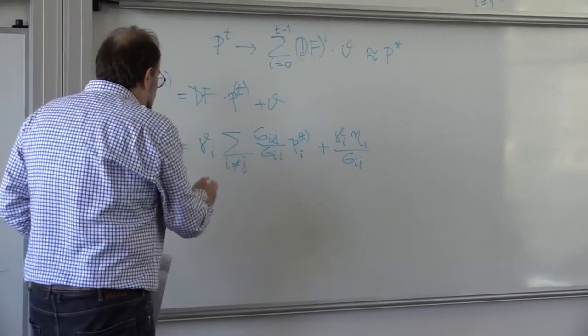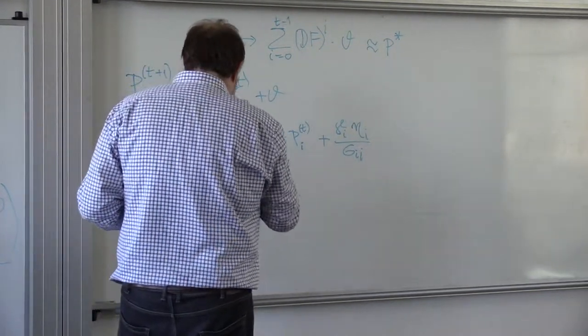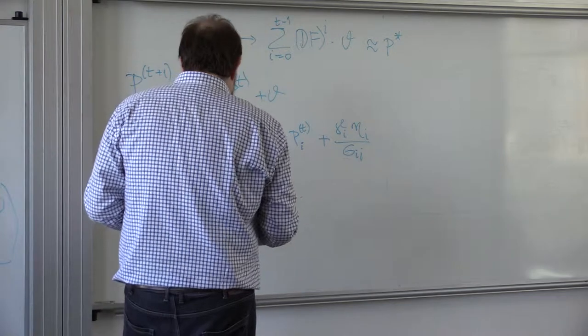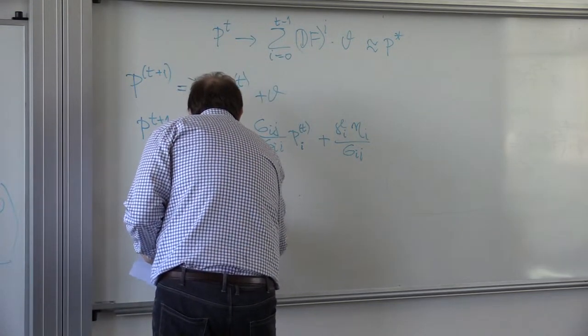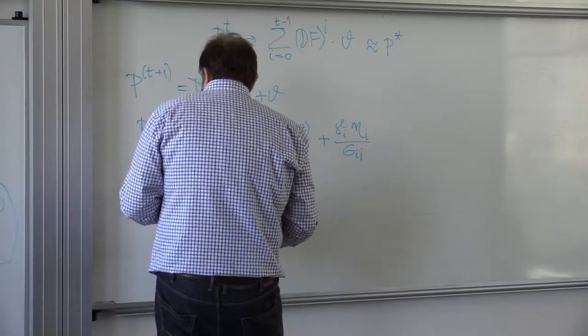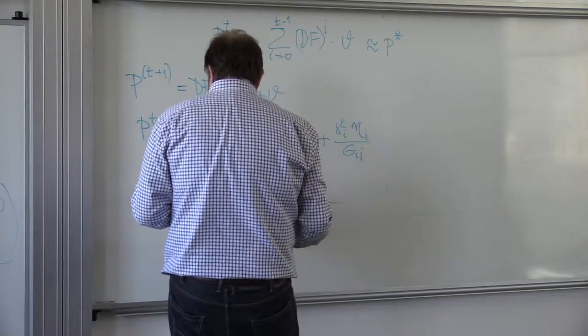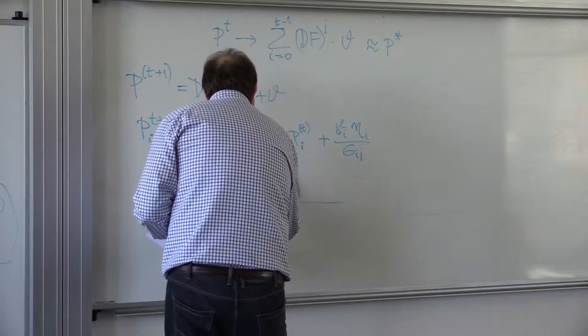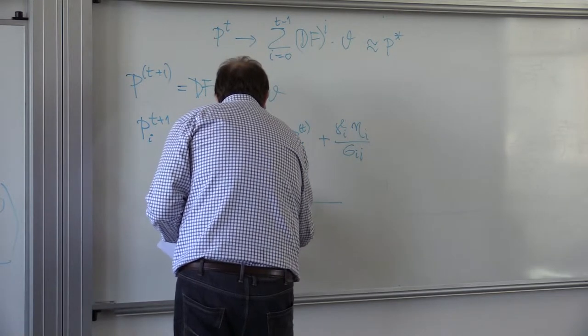But what is, what does this say? This says the following, that I can write it as follows, a little trick here. Gamma I, and here I'll put, take Gii out, and I will put here sum I is not equal to J.